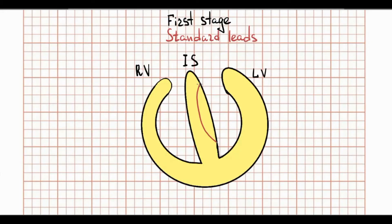Ventricular depolarization starts from the left side of the interventricular septum. This is because the left bundle of His is shorter than the right bundle of His. According to this, the depolarization stimulus arrives earlier to the end of the left bundle of His than to the right one. The left part of the interventricular septum has a negative charge and the right part has a positive charge. So the direction of the depolarization wave is oriented from left to right, from negative to positive charges.